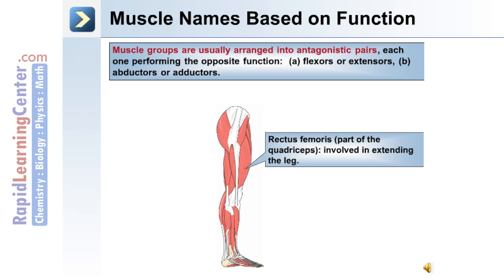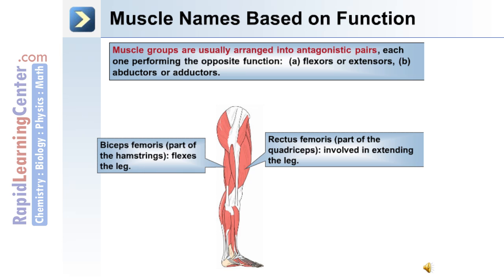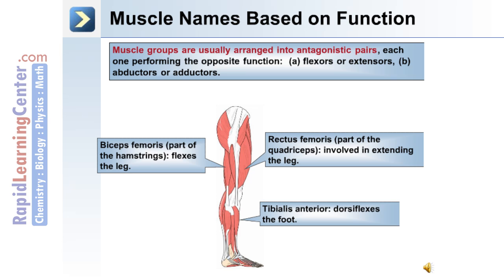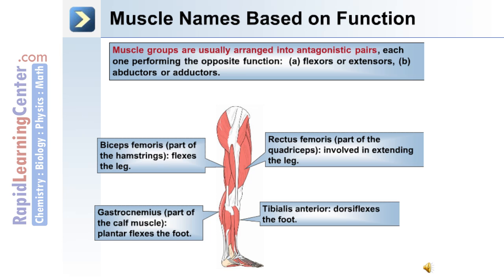The rectus femoris, for example, is part of the quadriceps, and it's involved in extending the leg. The biceps femoris is part of the hamstrings, and it flexes the leg. The tibialis anterior dorsiflexes the foot, whereas the gastrocnemius, which is part of the calf muscle, plantarflexes the foot.